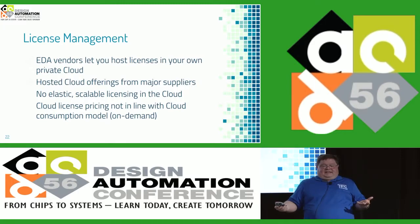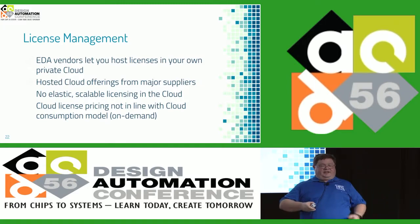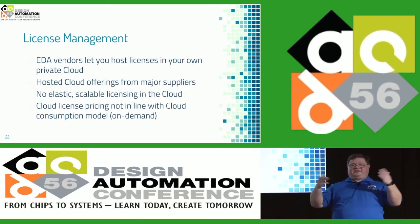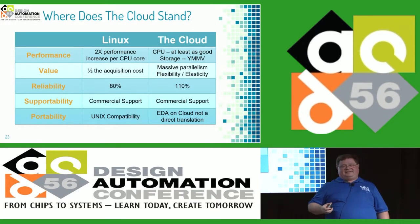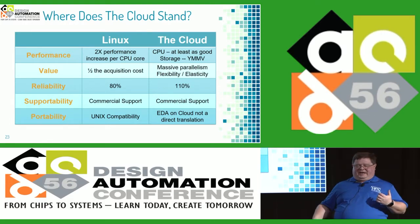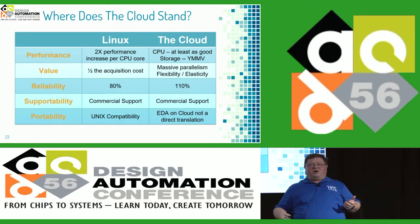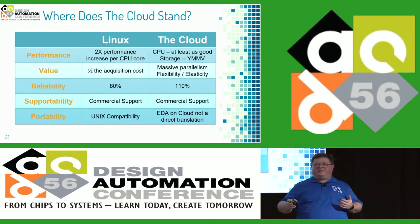There's not a really good elastic, scalable licensing model for the cloud yet. And cloud license pricing isn't in line with the rest of the cloud consumption model — it's not an on-demand thing. You can't just start using more licenses like you can spin up 10,000 more CPU cores or put a petabyte of storage online. You still have to call someone for licenses. So we've looked through all these different things — what does all of it really mean? Where does the cloud stand?